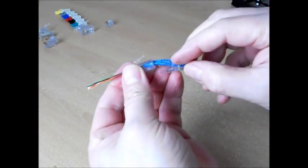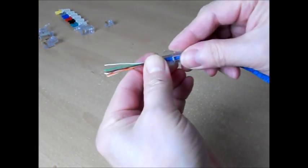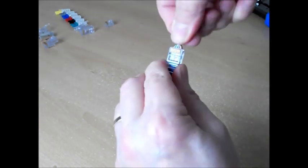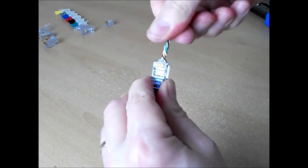Slide up the strain relief. Twist the cores together, just to make tidying up easier after they've been cut by the crimping tool.